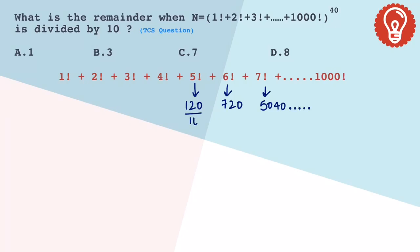120 divided by 10 gives remainder 0, and 720 divided by 10 also gives remainder 0. If you notice, from 5 factorial till 1000 factorial, on expanding those factorials and dividing them by 10, the remainder is always 0.